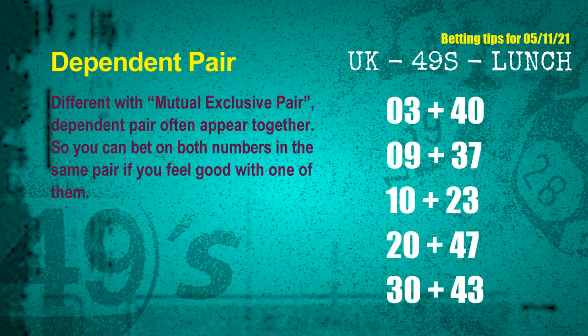Some numbers are mutual exclusive, some are dependent. Numbers in the same dependent pair you can bet on both, because they are often drawn in one draw. The dependent pairs for the next draw are: first pair, 03 and 40; second pair, 09 and 37; third pair, 10 and 23; fourth pair, 20 and 47; fifth pair, 30 and 43.